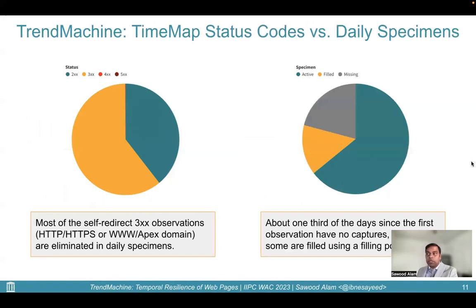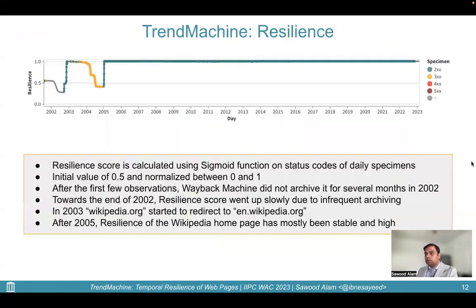The Trend Machine portal shows the distribution of various status codes in the CDX and the state of daily specimens. Most of the self-redirecting 3xx captures are eliminated in the daily specimen. About one third of the days since the first observation have no captures, of which some are filled using the selected filling policy when applicable. Resilience is calculated using a sigmoid function on the status codes of daily specimens with an initial value of 0.5, normalized between 0 and 1. It shows that after the first few observations, the Wayback Machine did not archive the home page of Wikipedia for several months in 2002. Towards the end of 2002, the resilience score went up slowly due to infrequent archiving. In 2003, wikipedia.org started to redirect to en.wikipedia.org. After 2005, the resilience of the Wikipedia home page has mostly been stable and high.